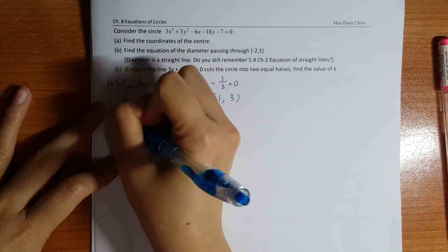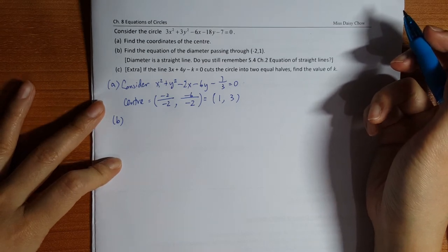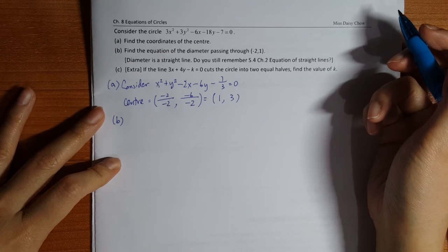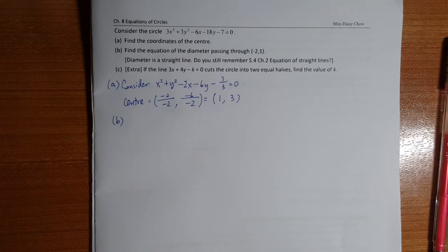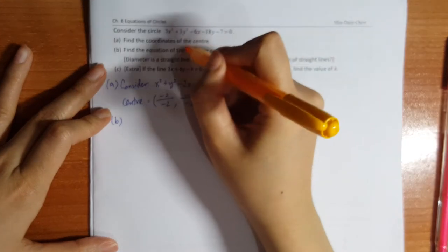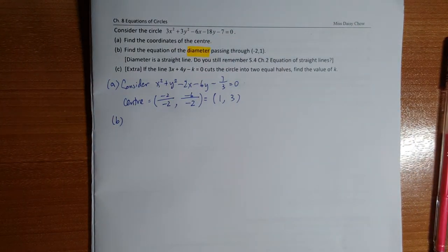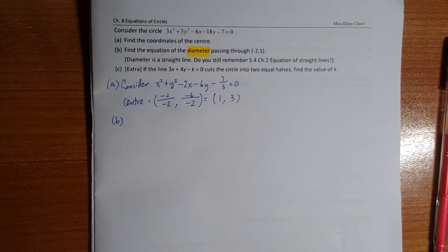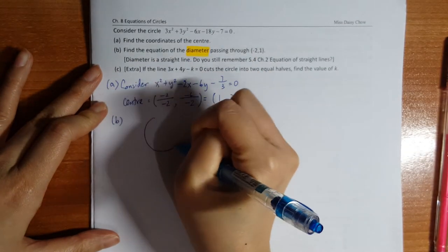And then for part b, you have to find the equation of diameter passing through negative two, one. So to do this questions, first of all, maybe I have to draw the circle.